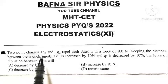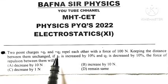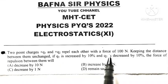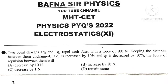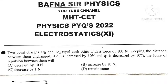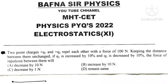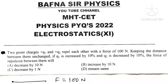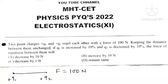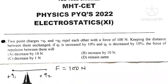Two point charges, plus Q1 and plus Q2, repel each other with a force of 100 Newton. Both charges are positive, so they repel each other. Force F is equal to 100 Newton, and they are separated by a distance R.